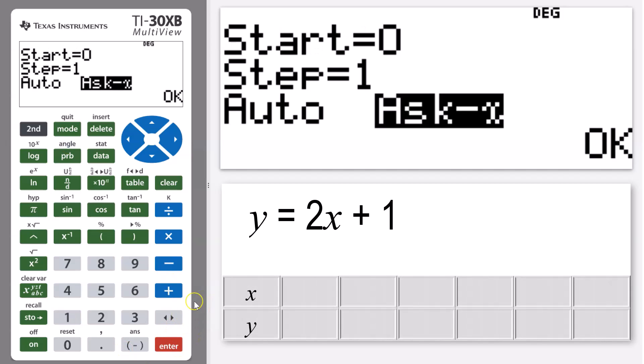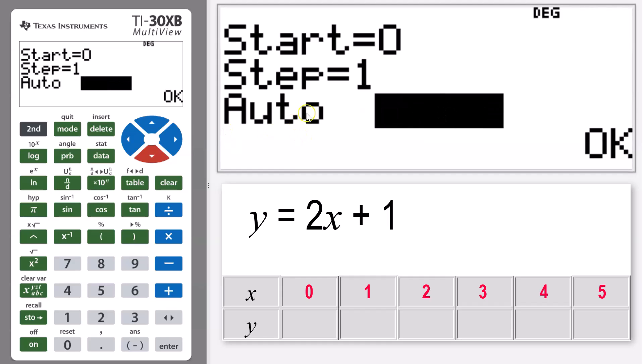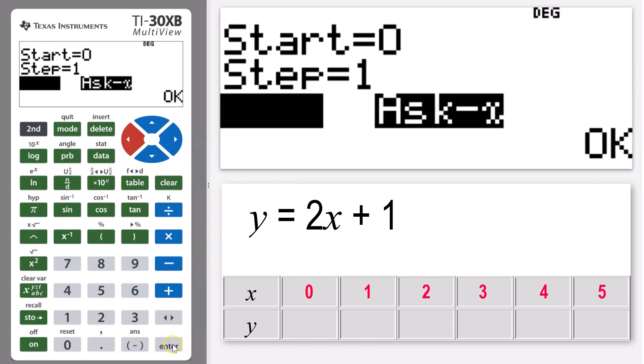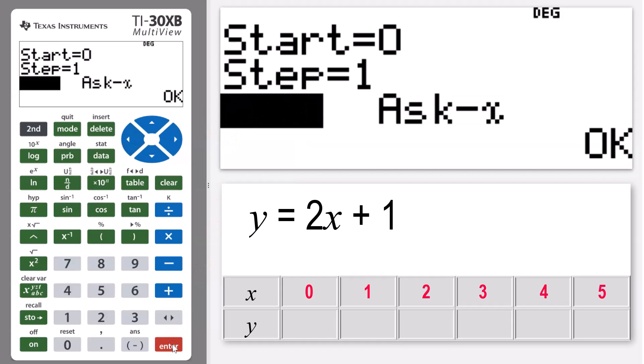Now the next menu that you're going to see come up is the start step menu, so this allows you to pick what x value you're going to start at and how much you want that x value to go up by. So I'm starting at 0 and I want it to go up just in 1s, so we're going to start off with a really basic x equals 1, 2, 3, etc. And the last thing I want to do is just change this last bit so it's on auto rather than ask x. So I'm going to use my arrows to scroll across, make sure that's highlighted and press enter to change that back to auto. We are going to go through a little bit later on in the video the value of the ask x, which is a really nice little thing that this function does.